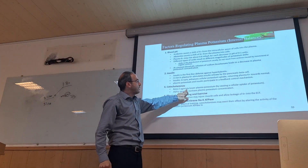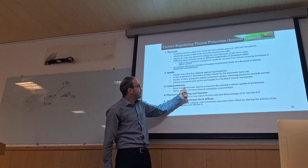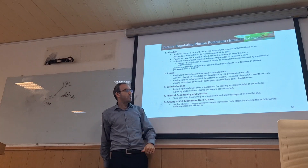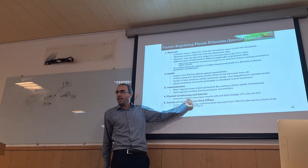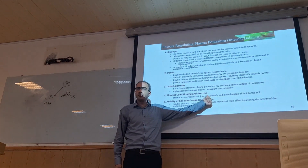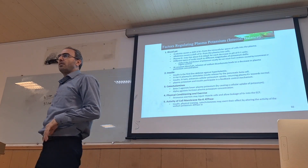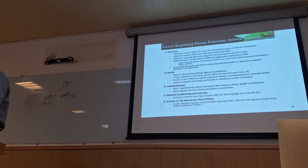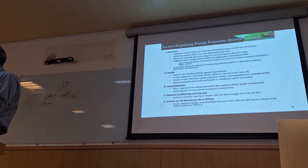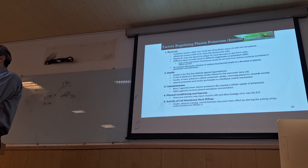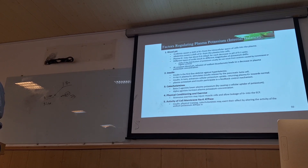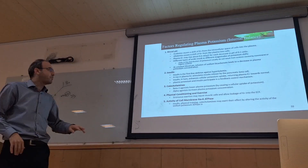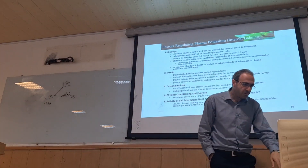Regarding catecholamines: beta-2 agonists lower plasma potassium, and alpha-2 agonists increase plasma potassium. Regarding physical conditions: severe trauma or injury leading to muscle cell injury causes leakage of potassium from inside the cell into plasma, increasing plasma potassium and leading to hyperkalemia. Activity of cell membrane also leads to hyperkalemia.